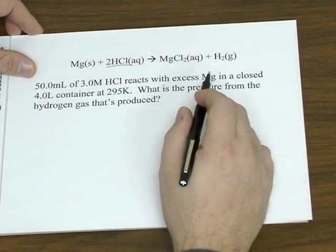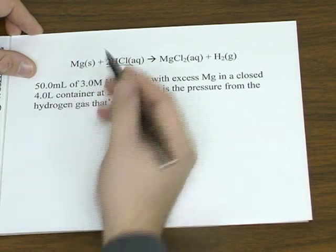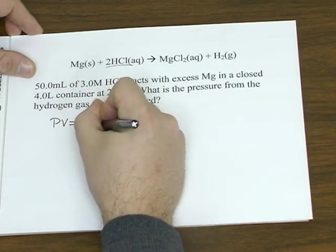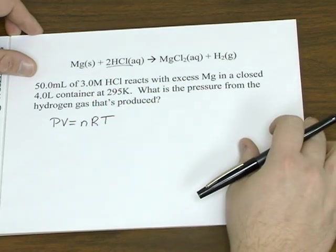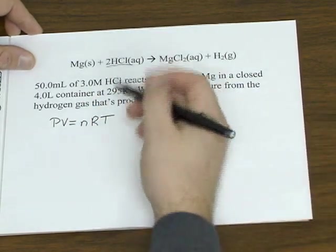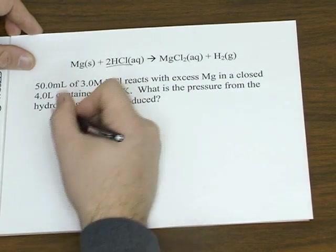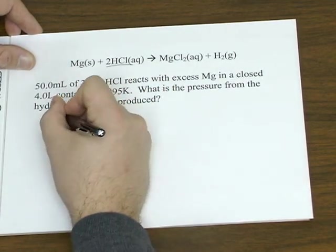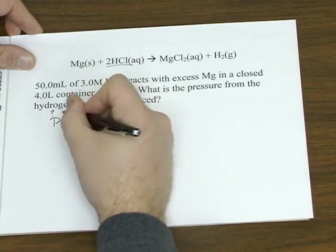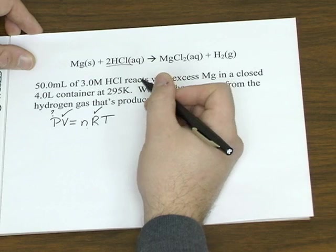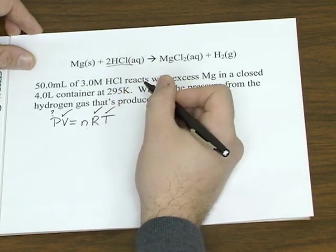Now the fact that we're dealing with pressure and we're dealing with a gas makes you think of the ideal gas law, PV equals NRT. So if you see what we're given, we're looking for the pressure, we're given a volume, the gas constant is given, temperature is given,